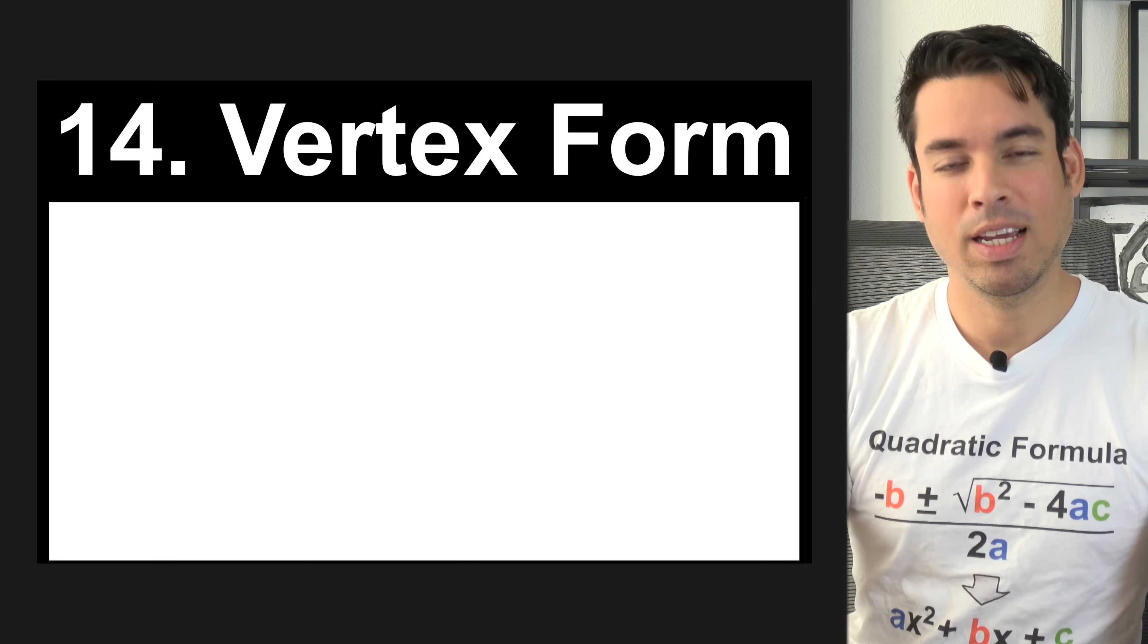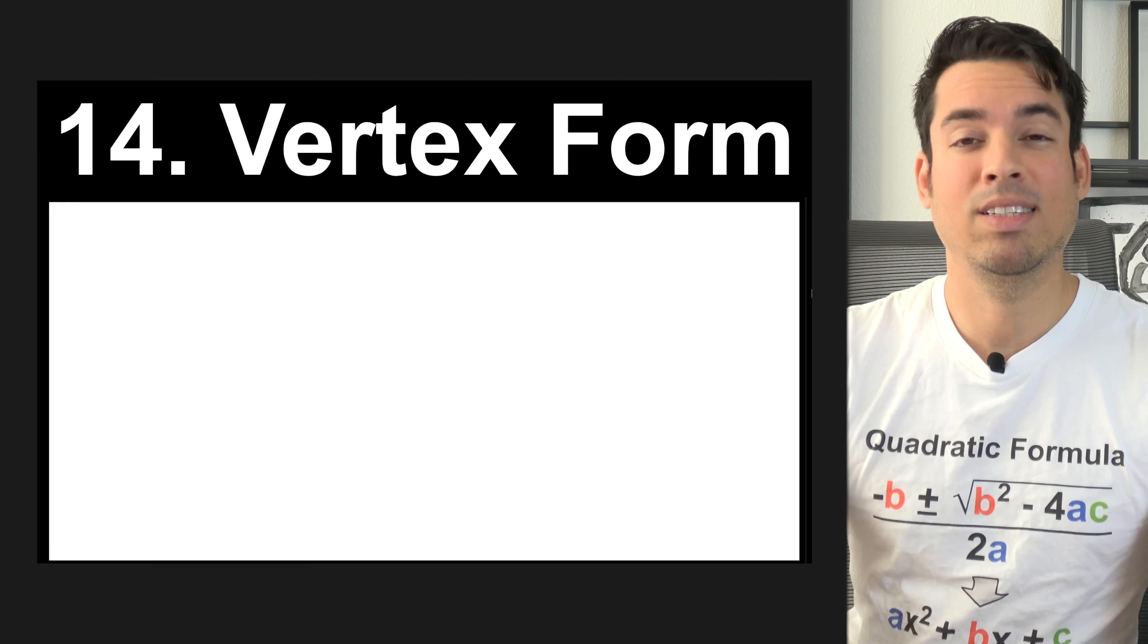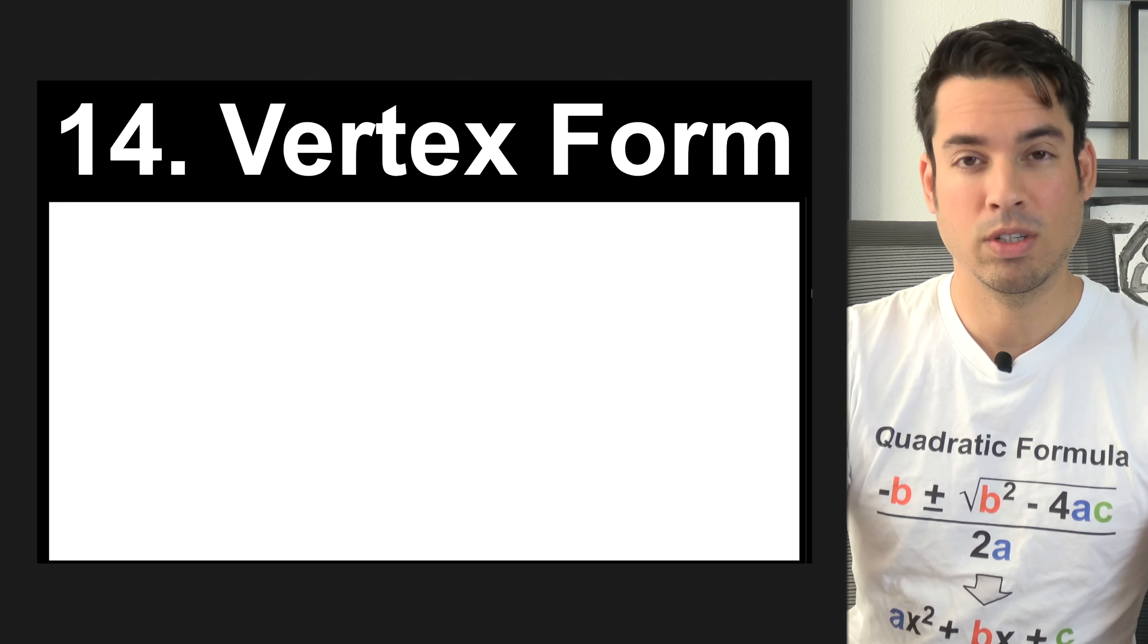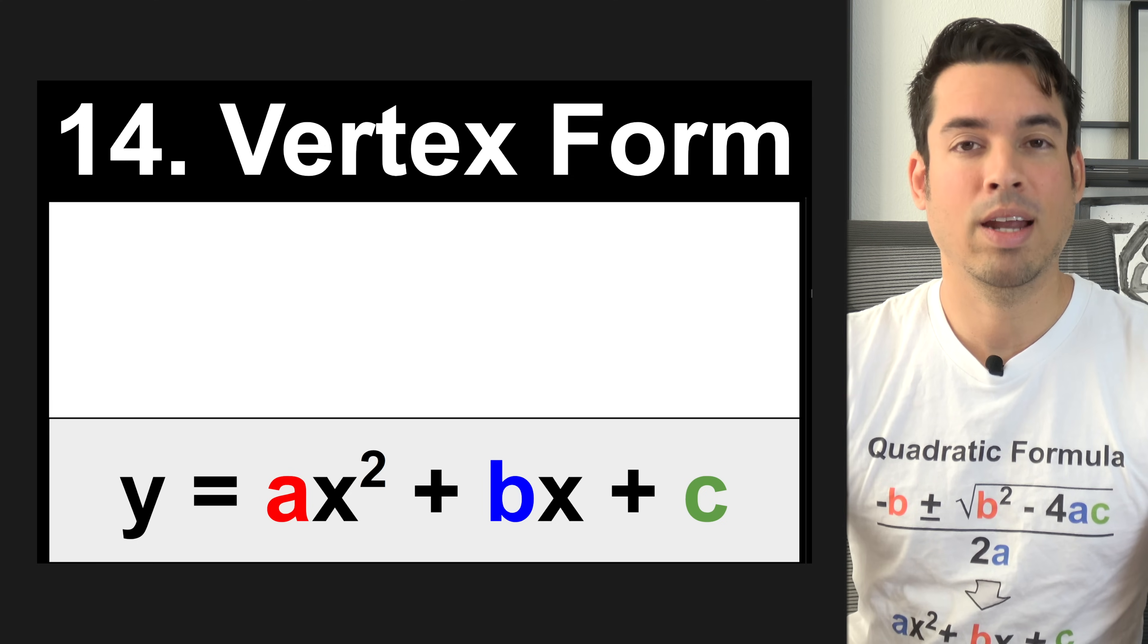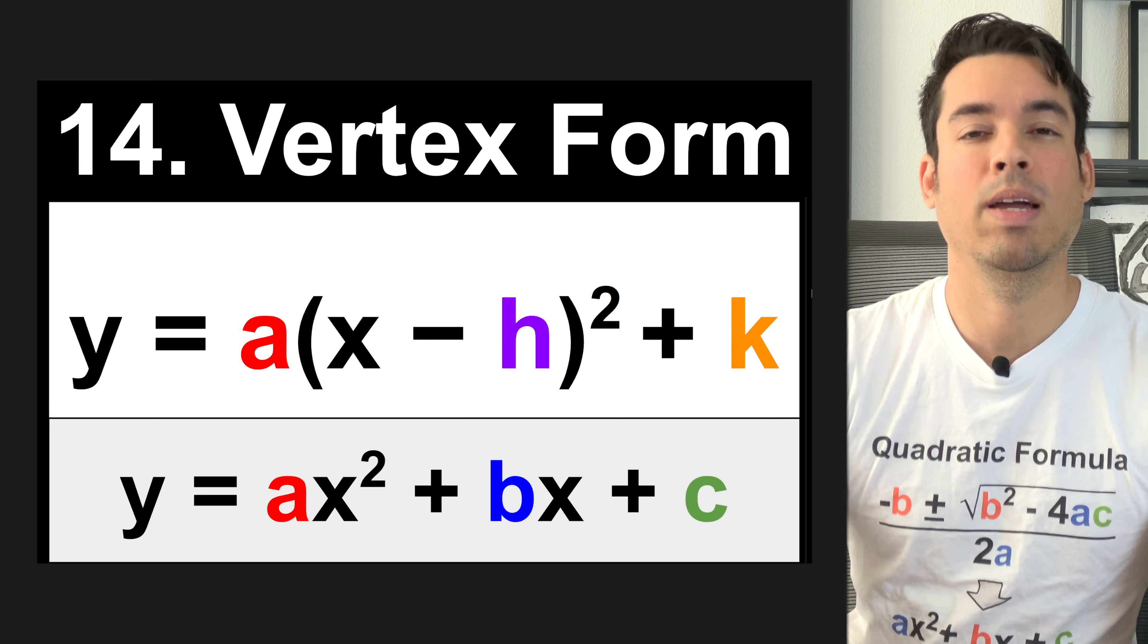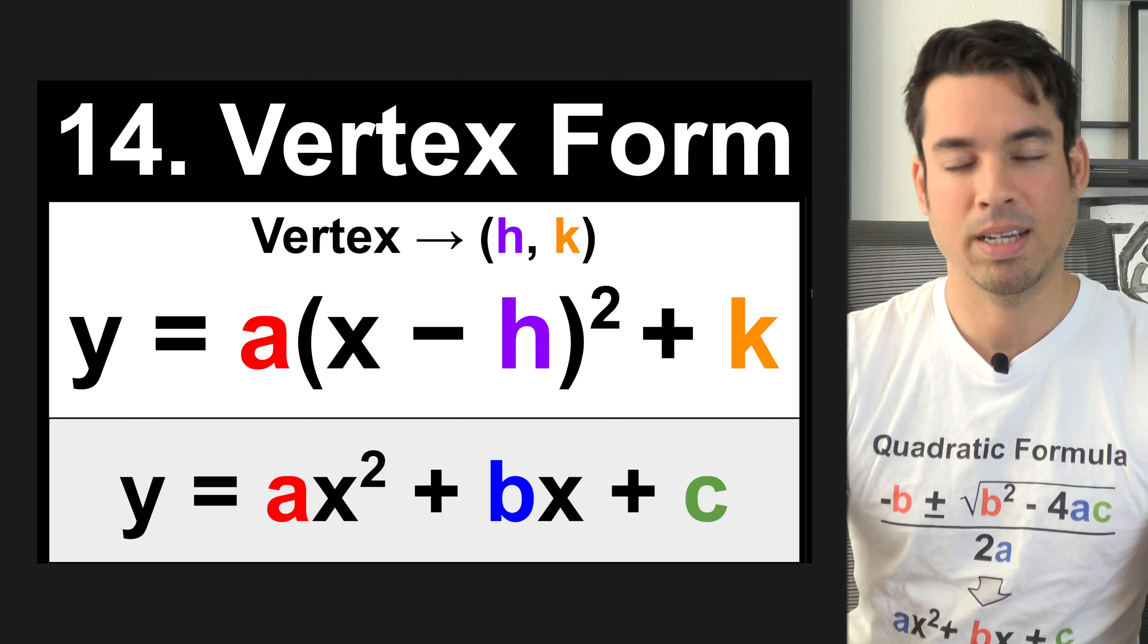Next, we've got vertex form of a quadratic. This is a really cool formula because you can look at it and immediately tell where the vertex is. Just for frame of reference, this would be the standard form of a quadratic. And here is vertex form. Note that the vertex is at h, k.